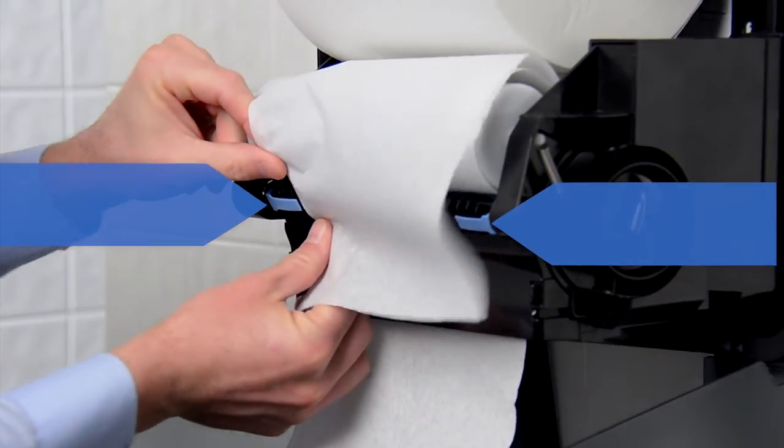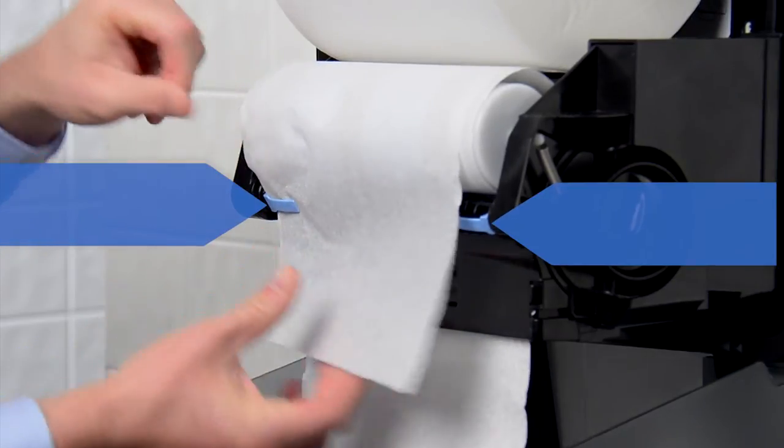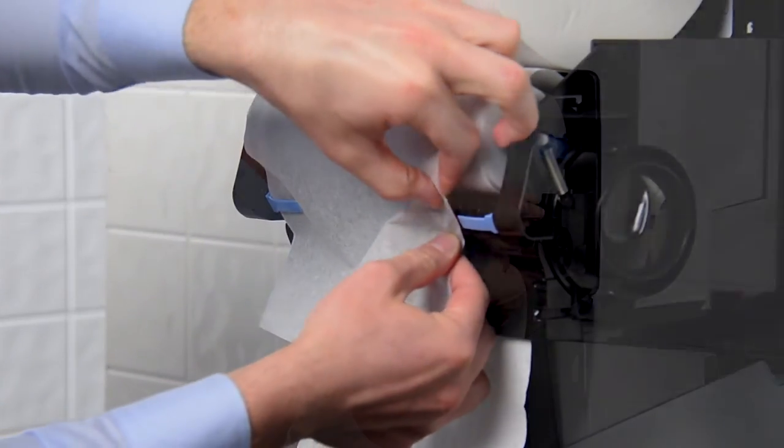Tuck the new towel tail between the blue clips located on the bottom right and left side of the drum and spindle mechanism.